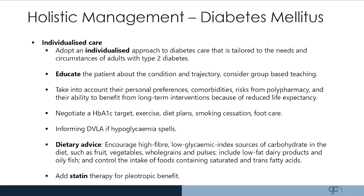If the patient has recurrent hypoglycemic spells or severe hyperglycemic symptoms, they should inform the DVLA as this may affect their driving. A diet of high fibre, low glycemic index sources of carbohydrates such as fruit, vegetables, whole grains, low-fat dairy products, and oily fish should be encouraged.